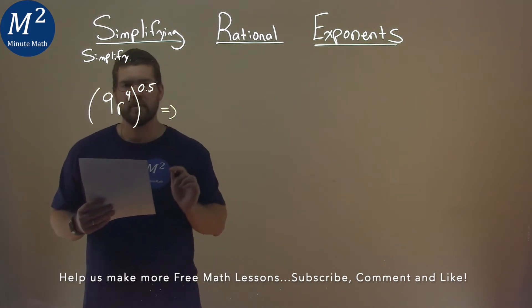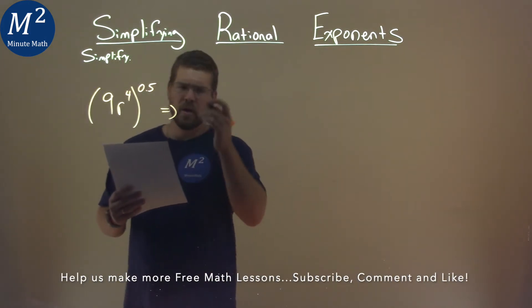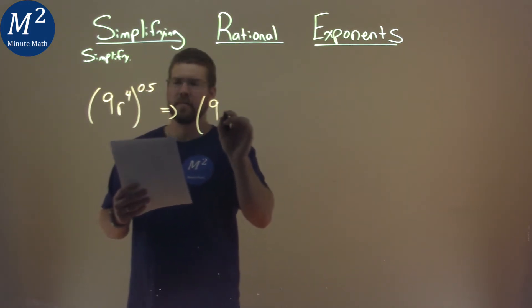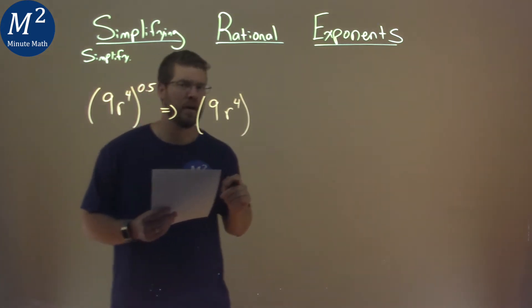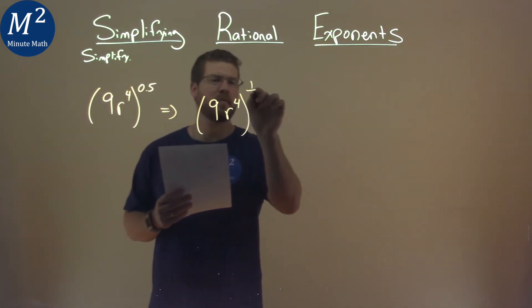Well, I don't really like having a decimal there, not all the time. So I'm gonna rewrite this to be 9r to the 4th power, but instead of 0.5, I'm gonna write one half in fraction form.